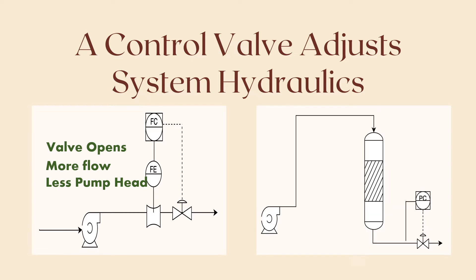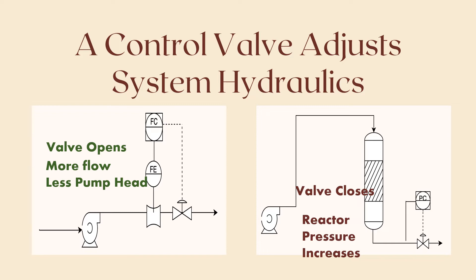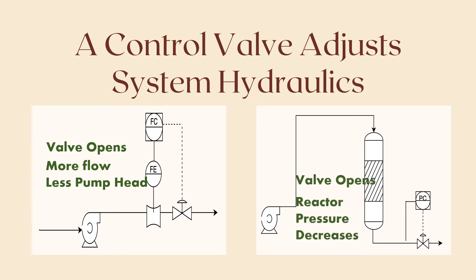In the second example, the control valve doesn't just adjust the flow, but also the reactor pressure. The pressure here is a much more important factor to control, because it will directly affect the reactor conversion, which shall lead to an off-spec product. So here it is not just a matter of controlling the process against some disturbance, but it is more related to adjusting the system hydraulics. Still, the valves are working as a final control element, receiving a signal from the flow or the pressure controller in their control loop.